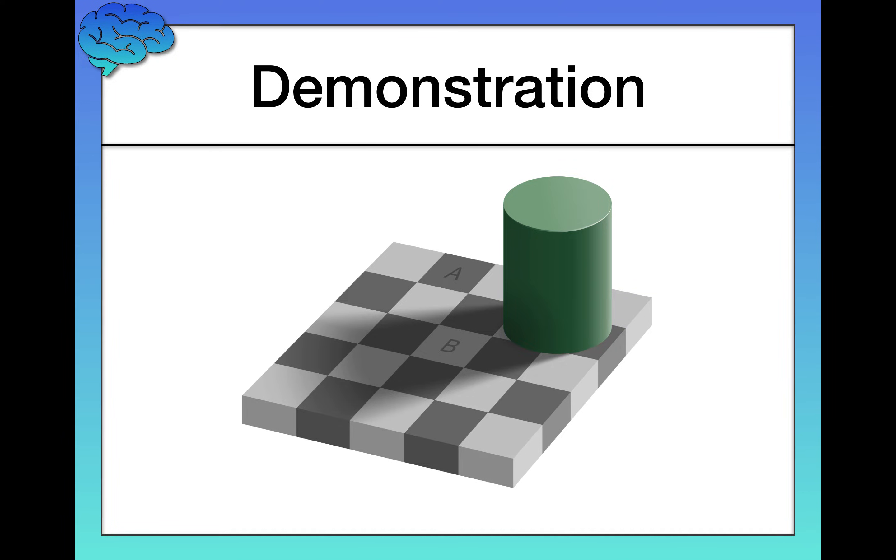Specifically, your brain actually sees in the beginning, right, in terms of what it senses, it sees that A and B are the same color. But then it notices that B is surrounded by a shadow. It's in a shadow.